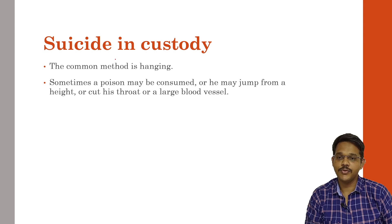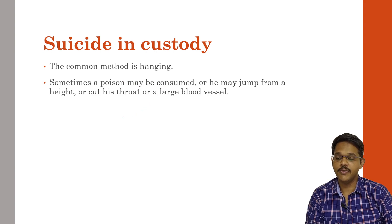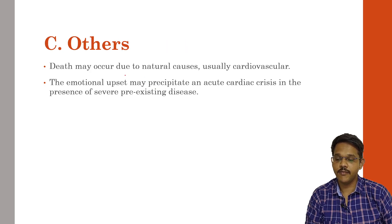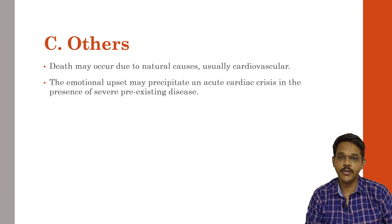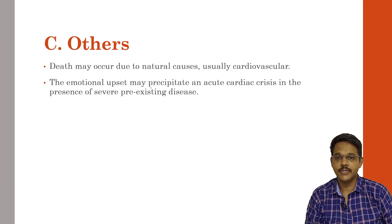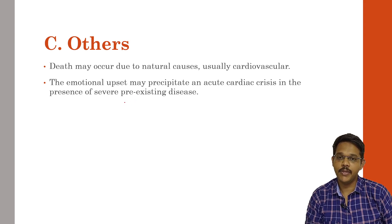Sometimes death in custody may also be caused by suicide of the prisoner. The common method is hanging. Sometimes poison may be consumed, or the person may jump from a height or cut blood vessels. Other reasons for death in custody include natural causes, usually cardiovascular. Because of emotional trauma, the person may undergo stress and die of cardiovascular arrest. Sometimes the person may already be ill due to long-standing pre-existing diseases and may die because of those.